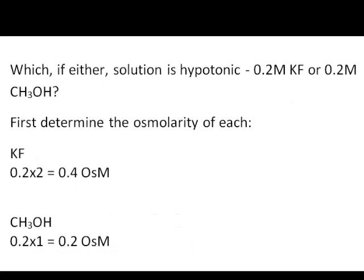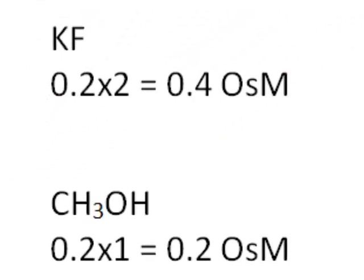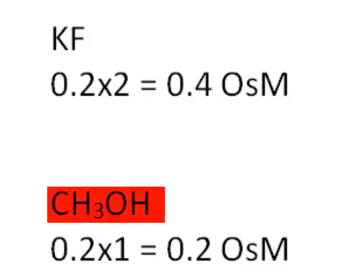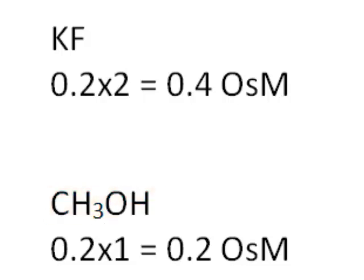Here's another example. Which, if either solution, is hypotonic, 0.2 molar potassium fluoride or 0.2 molar methanol, CH3OH? The osmolarity of potassium fluoride is 0.4. The osmolarity of the methanol is 0.2. There are no ions in this formula. CH3OH is a molecular or covalent compound. Therefore, no ions, and the osmolarity is the same as the molarity. In this case, methanol is hypotonic to the potassium fluoride solution.